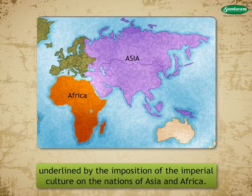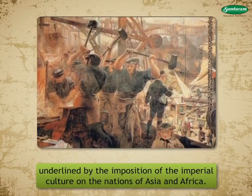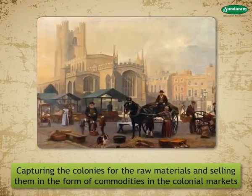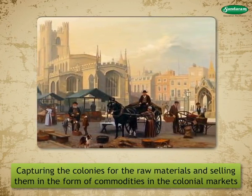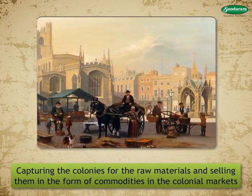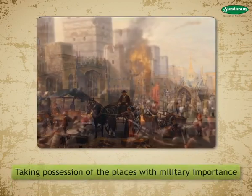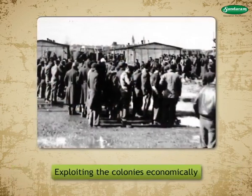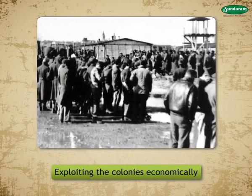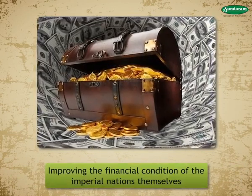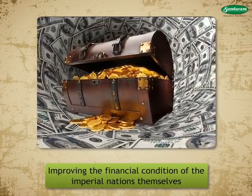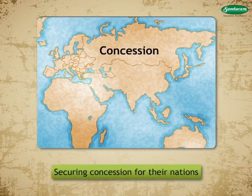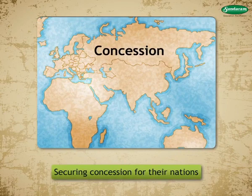The economic imperialism got further extended after the industrial revolution. It consisted of capturing colonies for raw materials and selling them in the form of commodities in colonial markets, taking possession of places with military importance, exploiting the colonies economically, improving the financial condition of the imperial nations themselves, imposing restrictions on the colonies, and securing concessions for their nations.